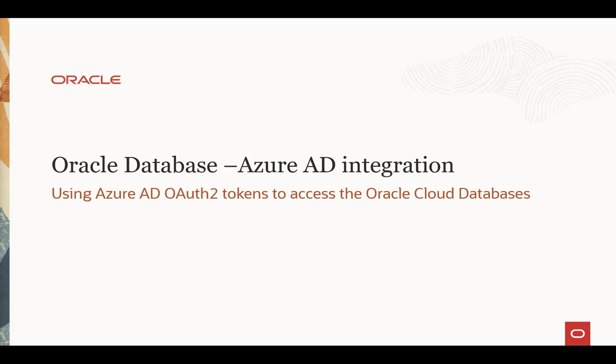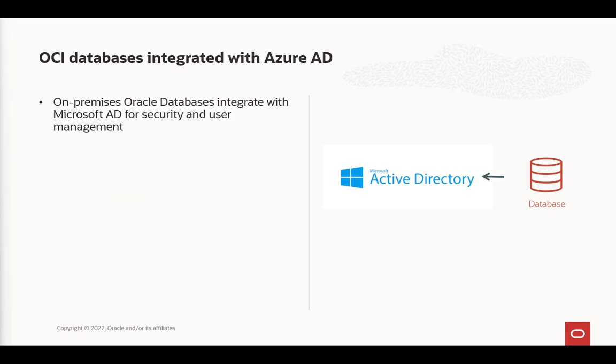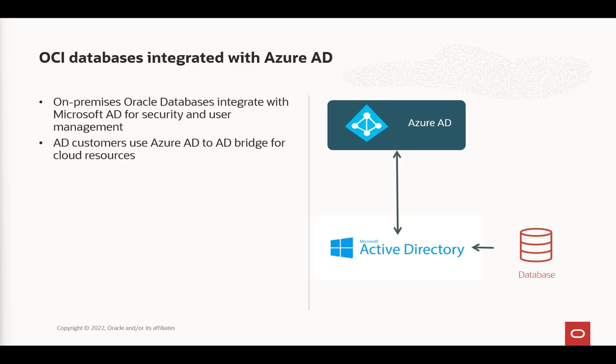We recently introduced a new feature for the Oracle Database: the integration with Azure AD to be able to use Azure AD OAuth through tokens to access the database. For on-premises, many of our customers use Active Directory as a source of users to access the database, and we have a direct integration with that called centrally managed users. Many of these customers extend Active Directory using the bridge, and they have Azure AD in the Azure portal to be able to manage cloud resources.